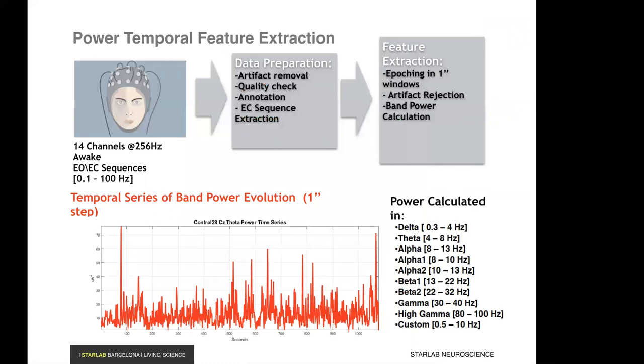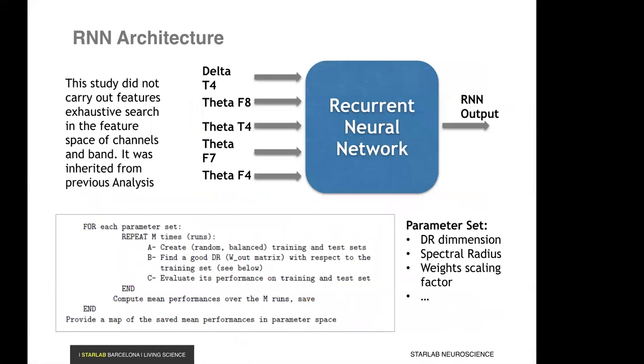More concretely, we have here 14 channels of EEG at 256 hertz from a few minutes of data. These are data preparation steps, artifact removal, quality check, annotations, the extraction of sequences, and then the computation of band power at one-second intervals. And in the bottom, you can see a graph of the time series of this power. And the idea is that hidden in this time series, which looks like a very noisy signal, there is information that can tell you if this comes from a patient who is a healthy control or is from an RBD patient that will convert into PD in a few years. And this can be done for different bands from the lower frequency to the higher frequency bands of EEG.